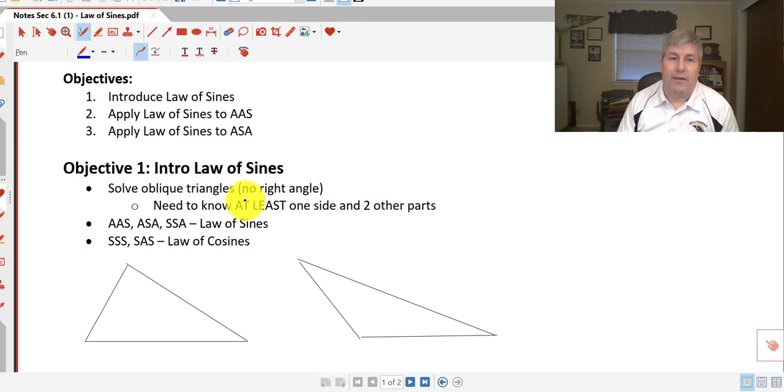The law of sines allows us to solve oblique triangles, or triangles that are not right triangles. In order to apply the law of sines, we need to know at least one side and two other parts. If we have two angles and a non-included side, or two angles and an included side, or two sides and a non-included angle, we can apply the law of sines.